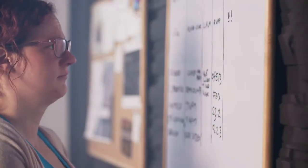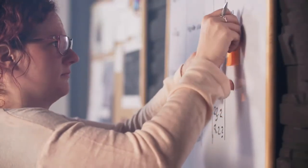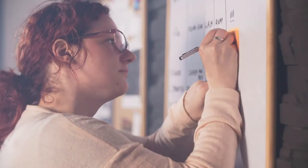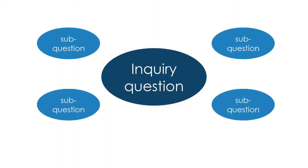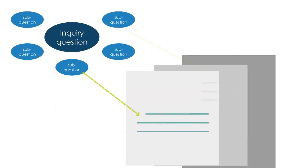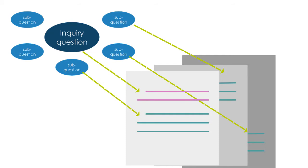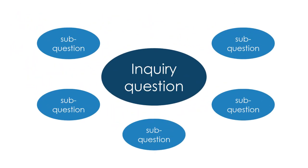If you don't have an inquiry question yet, you can work on that as part of this workshop. The other piece we want to get into place is a series of sub-questions. These sub-questions are pretty important because they become the component parts of the paper or project you're working on — the subsections you'll end up having. Those are going to become a series of sub-claims, your inquiry question is going to become a thesis statement, and they'll all come together through what we're calling rhetorical moves, which we'll talk about more later.